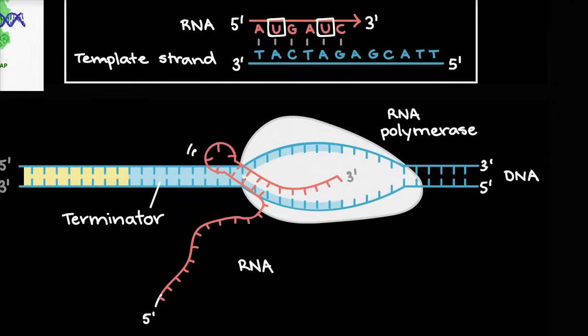So let me write, so this area is a terminator, and there's multiple ways that that signals to the RNA polymerase, that hey, it's time to stop, or more particularly, that it somehow creates something structurally, that the polymerase just lets go.